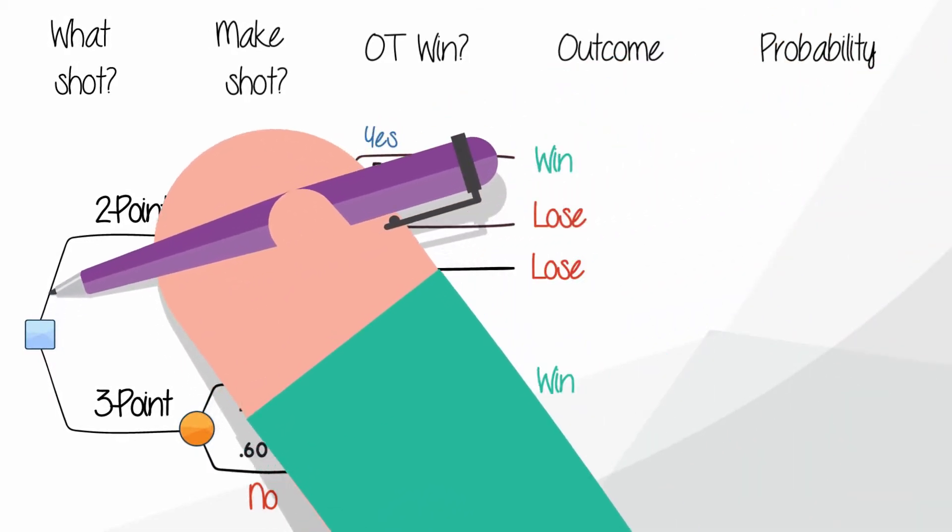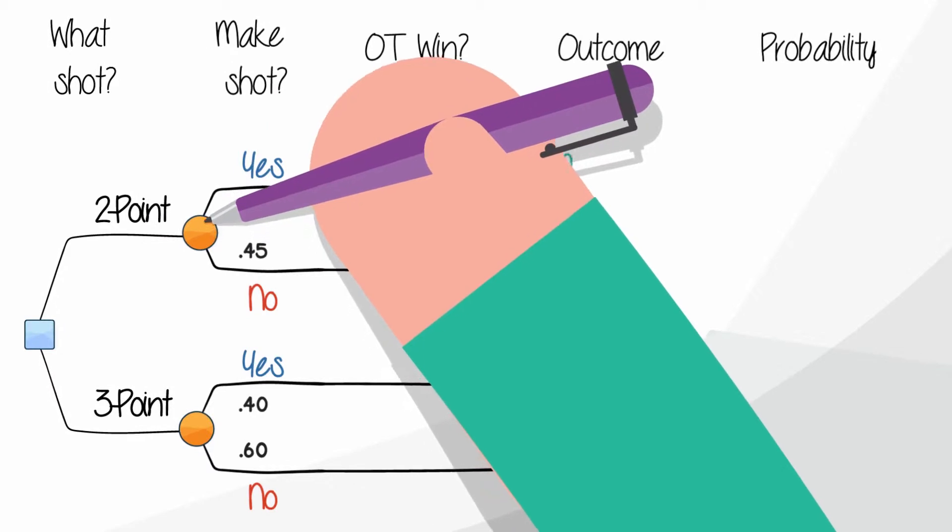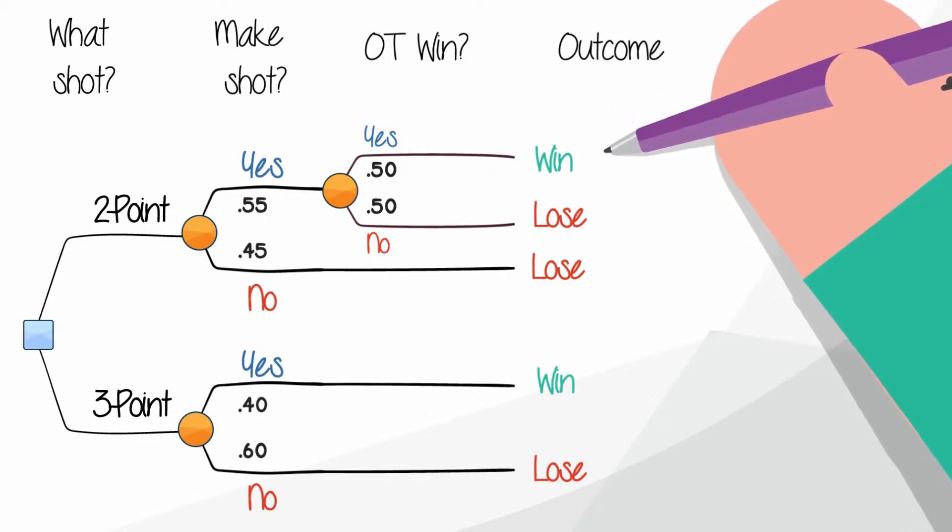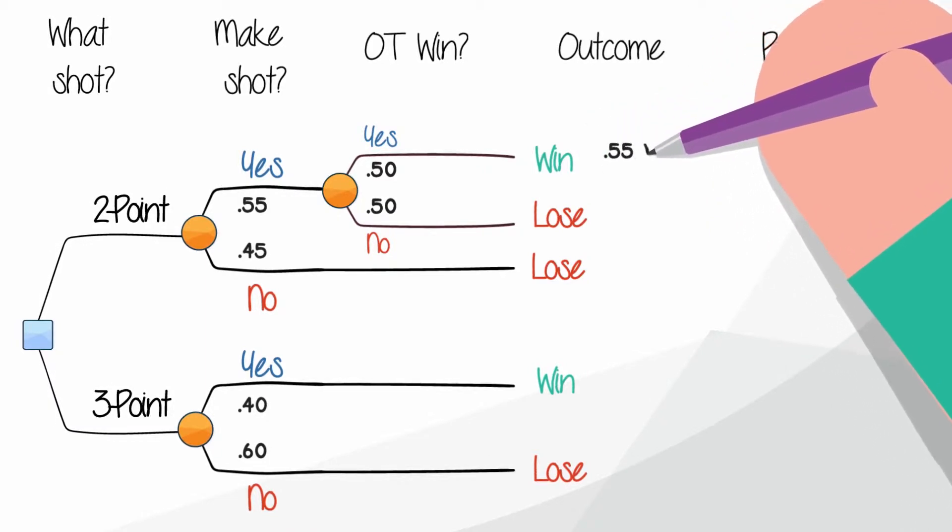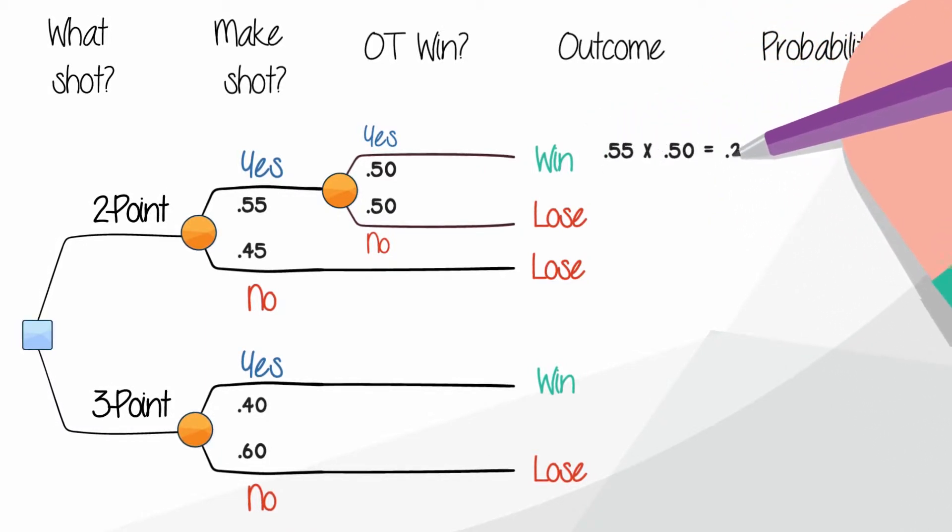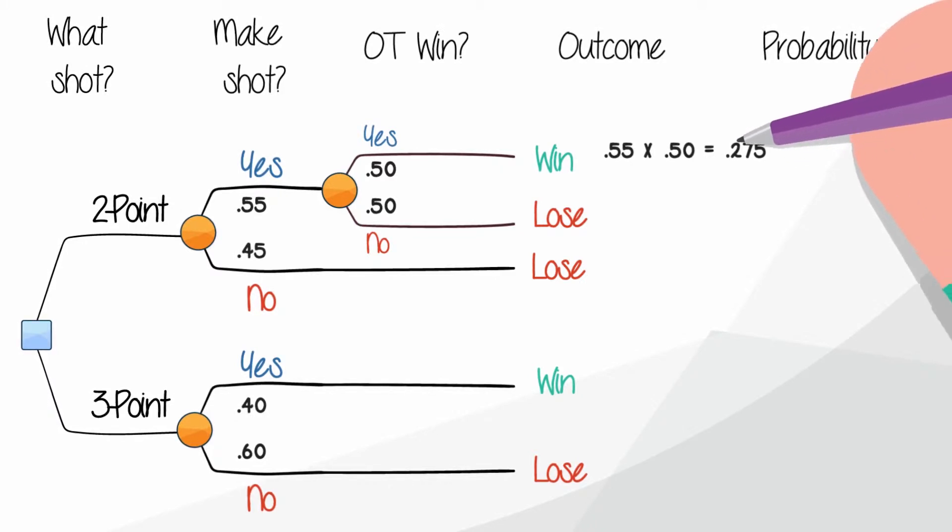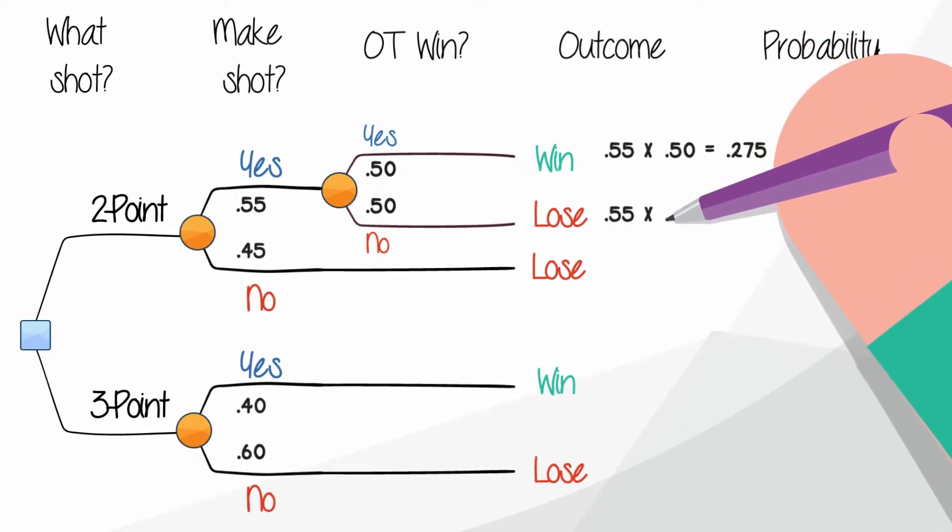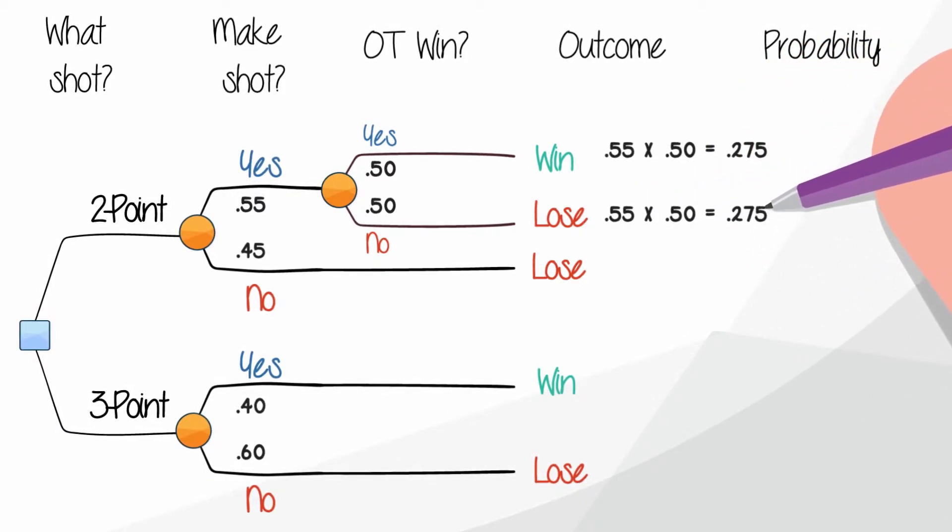Now, following the two-point shot path, you're 55% likely to make the shot, and 50% likely to win in overtime. To find the probability that we'll make the two-point shot and win in overtime, we multiply the two, giving us a 27.5% chance. Since we're equally likely to lose in overtime as win, the chance of losing in overtime is also 27.5%. This is called a joint probability.